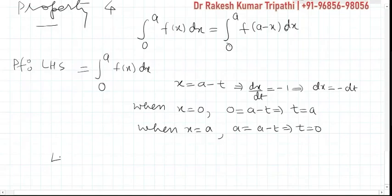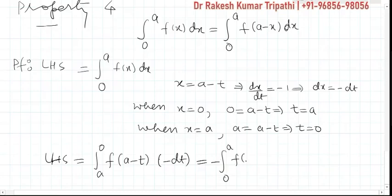So the left hand side becomes, instead of 0 to a, limits will be now a to 0, f of a minus t, and dx is minus dt. Now on interchanging limits 0 to a, a negative sign will come out.